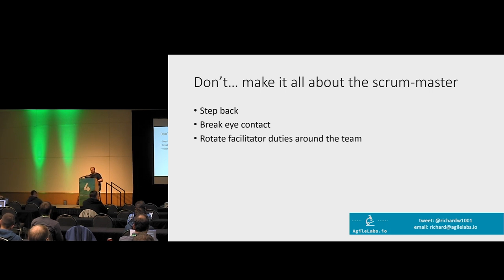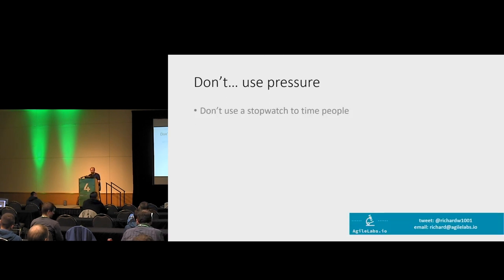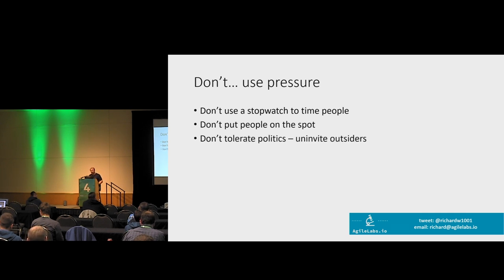It's also nice to rotate Scrum master or facilitator duties around the team. The more people know how to do this, they learn what's important about it — what makes the meeting go well or badly. If one person is always Scrum master, everyone goes 'that's always John's problem.' Try to avoid pressure situations — running a stopwatch on people if they give long updates is horrible. Don't put people on the spot or ask them why they didn't finish their thing yesterday. If you've got people who aren't giving coherent stand-up updates, talk to them five minutes before.